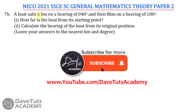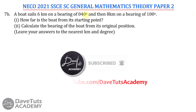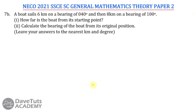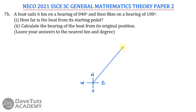Looking at the first statement: the boat is moving 6 km on a bearing of 040 degrees. 040 degrees is in the first quadrant, so we draw a diagram with north, south, east, and west. The movement on a bearing of 040 degrees looks like this — inclined into the first quadrant.